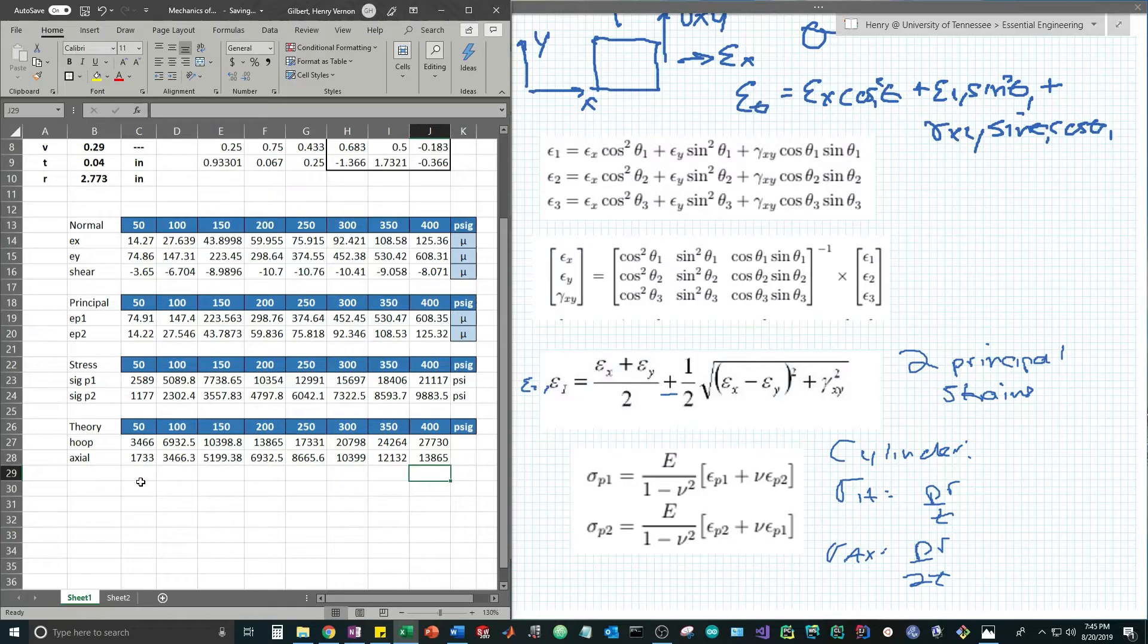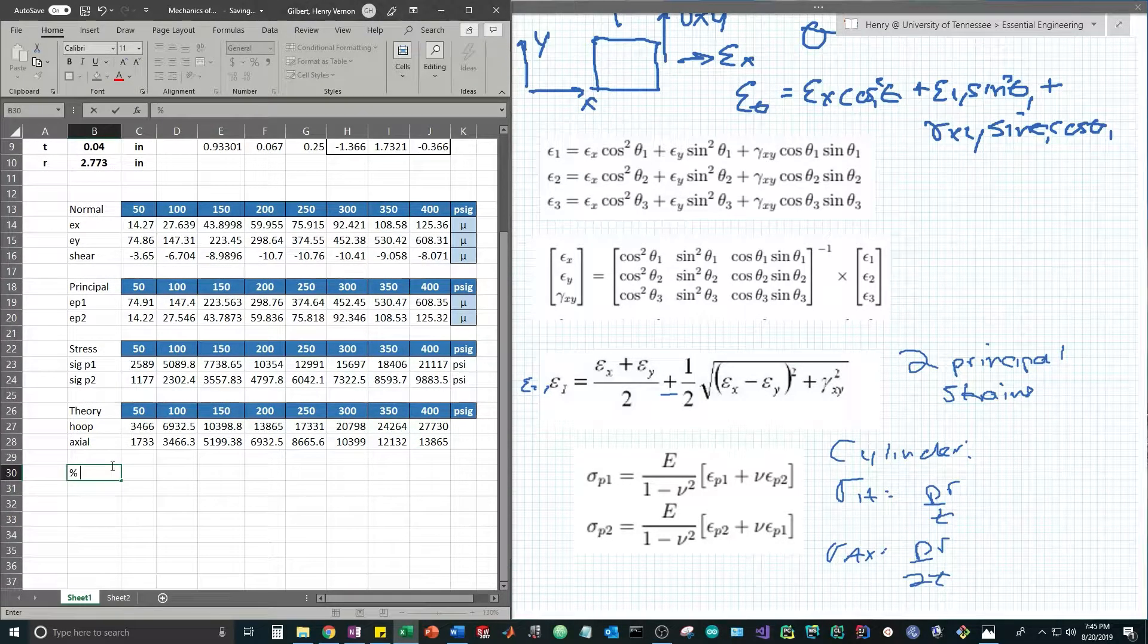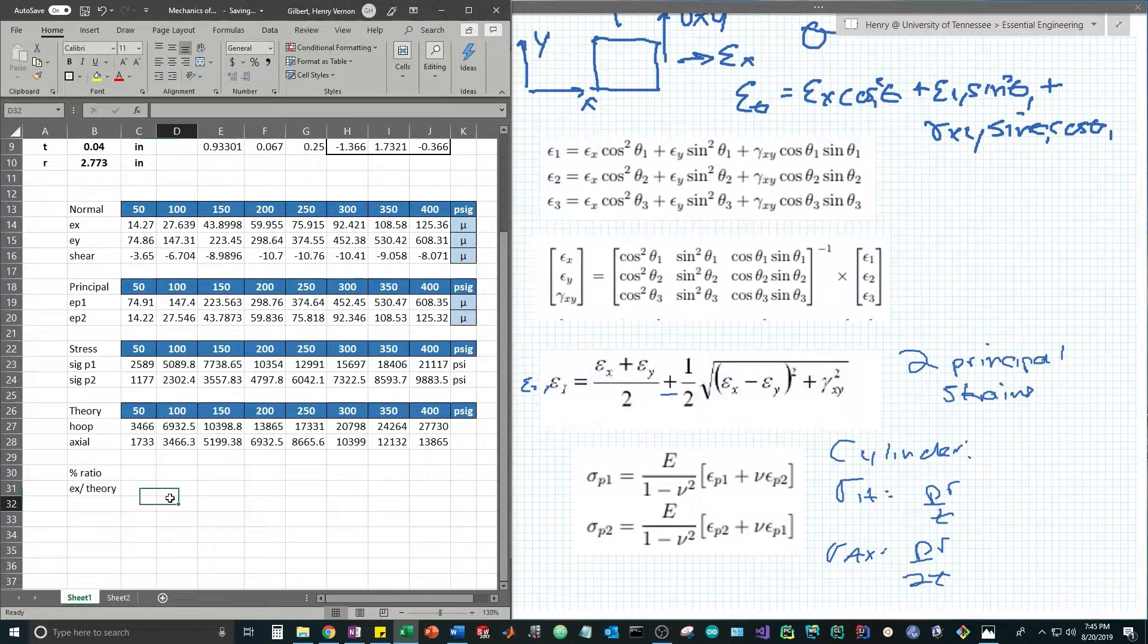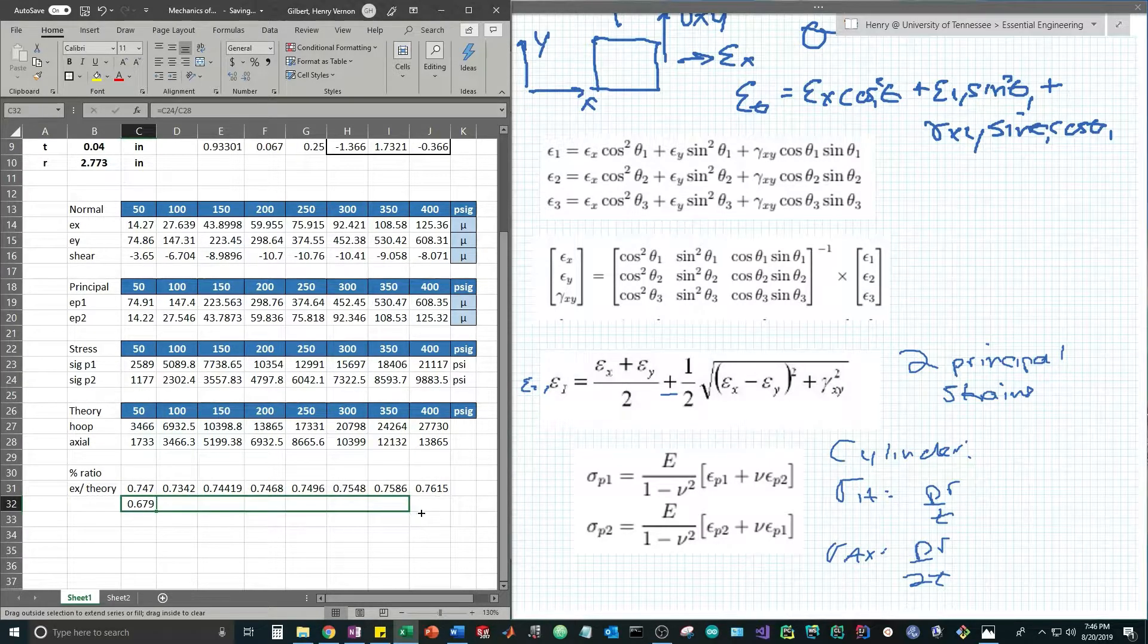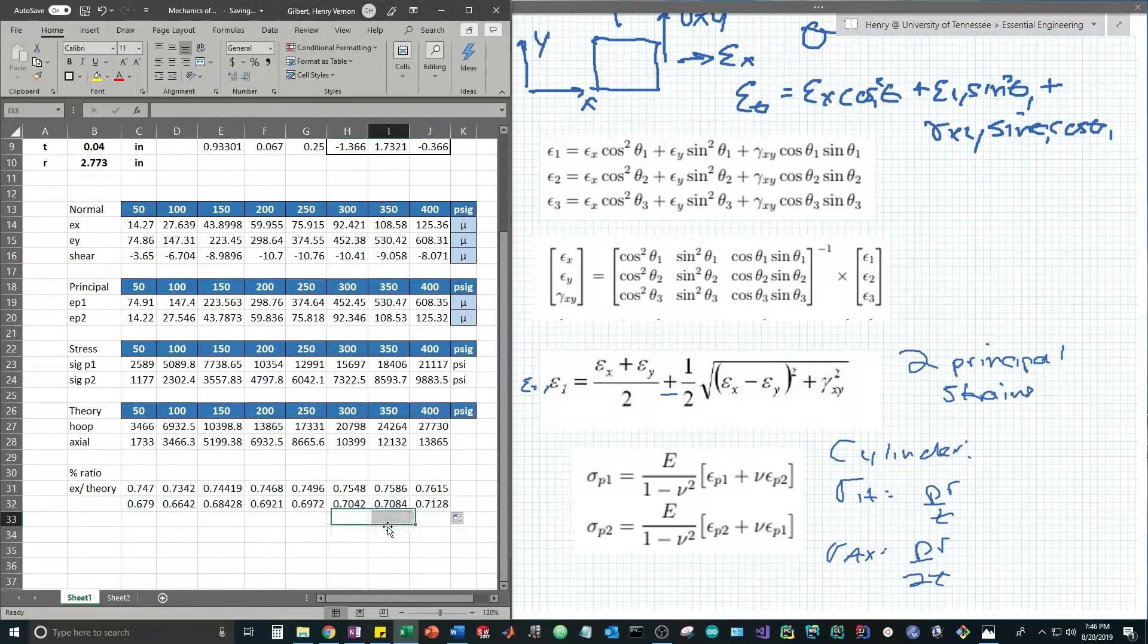Let's compare our values by using a percentage ratio of experimental divided by theoretical. Experimentally we calculated the pressure at 2589, but the theory said it should be 3466. Now let's compare the axial stress measured in this vessel by dividing it by the theoretical. Ideally these numbers should be 1 if we were perfect, and you're seeing we're getting some pretty lousy numbers. 75% is not the most accurate measurement.